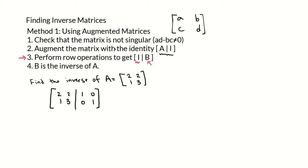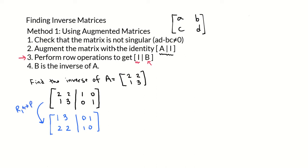We can use any order of acceptable row operations: we can switch rows with each other, multiply rows by something, or add rows together — any row operations in order to get 1, 0, 0, 1 on the left side of this augmented matrix. Since our goal is to get 1, 0, 0, 1, the first thing I want to do is switch row 1 with row 2. That gives us 1, 3, 2, 2 on the left and 0, 1, 1, 0 on the right. We did that because now we have the 1 where we want it on the top row.